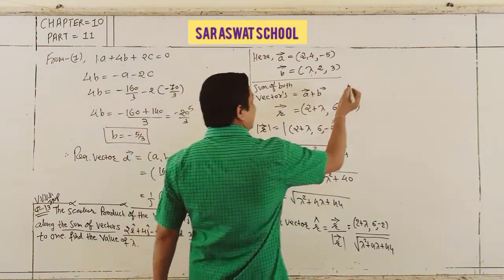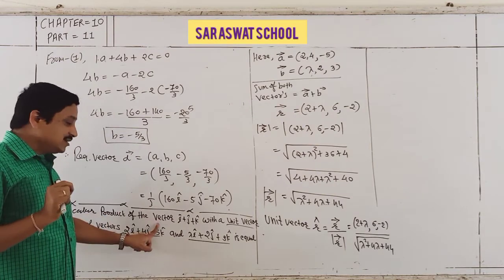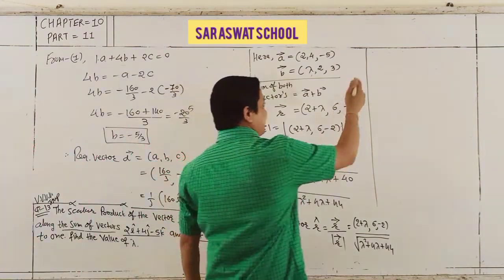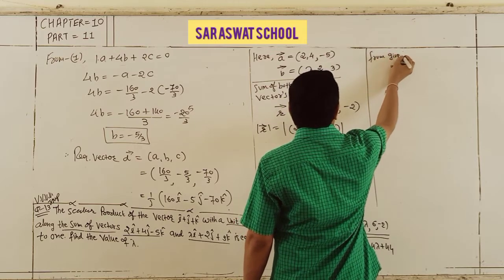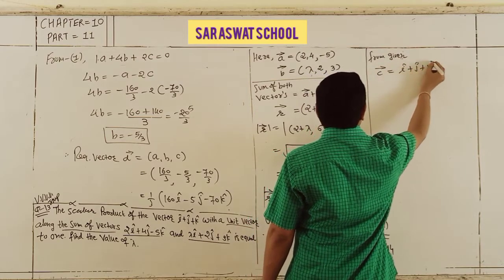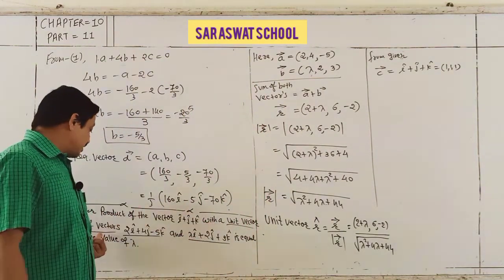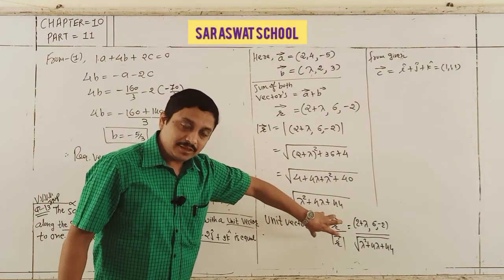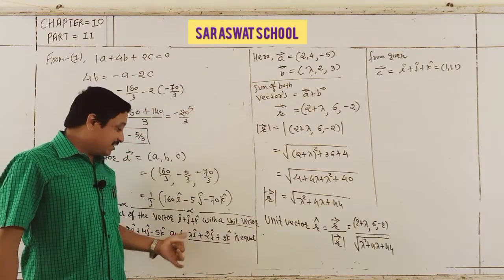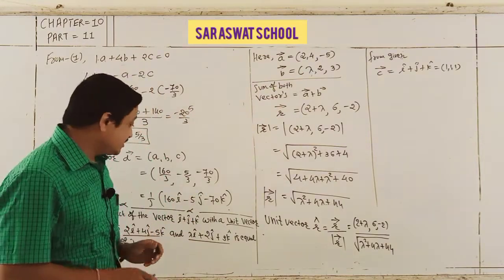Re-reading the question: scalar product means dot product of vector i + j + k with the unit vector from the sum. So c dot r̂ = 1, meaning (1, 1, 1) dot (2 + λ, 6, −2) divided by √(λ² + 4λ + 44) = 1.